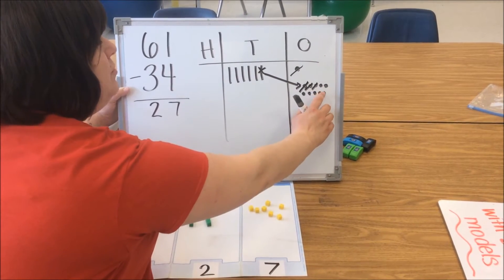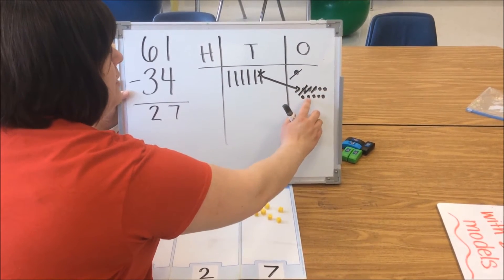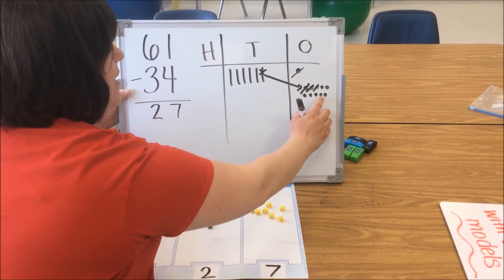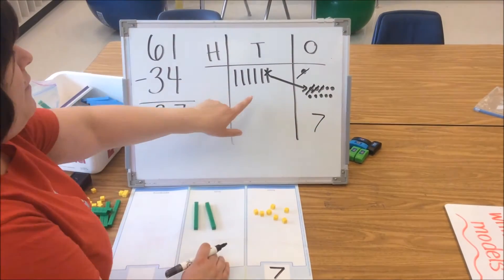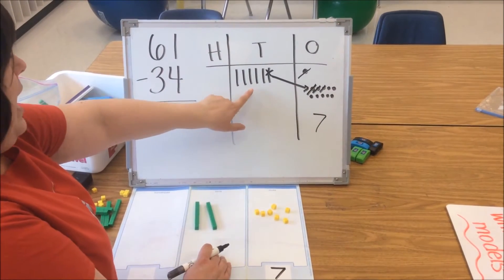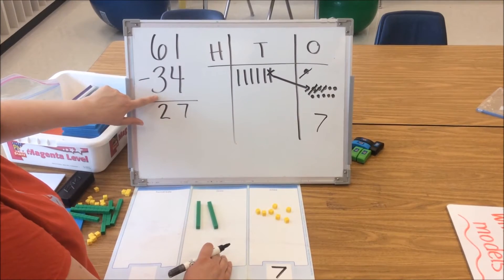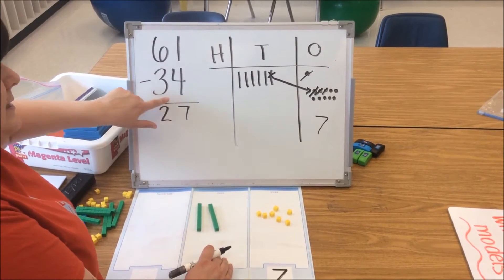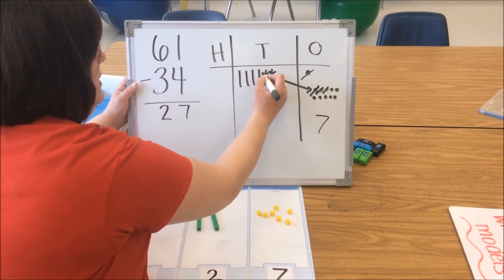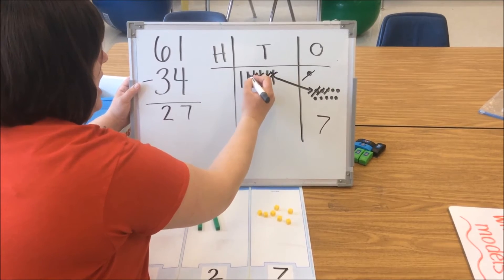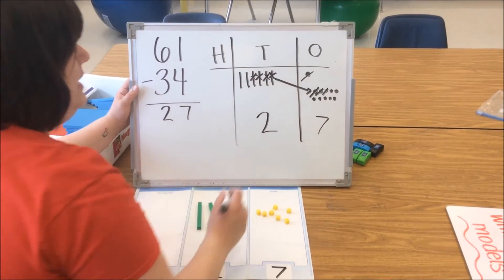And we're going to count what's remaining: 1, 2, 3, 4, 5, 6, 7. We're going to go over to our 10s column. We see we need to take away 3 tens: 1, 2, 3. And we have 2 tens remaining.